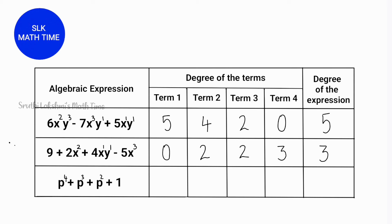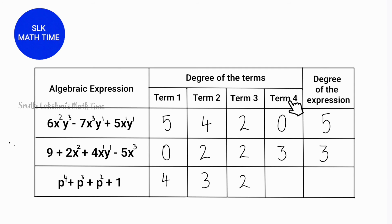Now let's move on to the last expression. Here we have 4 terms as well. The first term is p⁴, so the degree of term 1 is 4. The second term is p³, so the degree is 3. Likewise, the third term gives a degree of 2. The fourth term is a constant, and the degree of a constant is always 0. The highest degree of all these terms is 4, so the degree of this expression is 4.